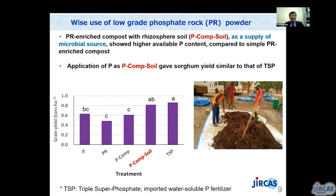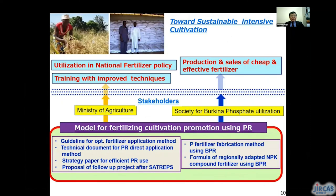We are also conducting various experiments using phosphate rock powder. The project will end in April 2023. Project outputs will include many technical documents, such as phosphorus fertilizer fabrication methods, guidelines for optimum fertilizer application methods, and phosphate rock direct application methods. We expect these outputs to contribute to national fertilizer policy, training with improved techniques, and local production and sales of cheap and effective fertilizer to achieve sustainable intensive cultivation.